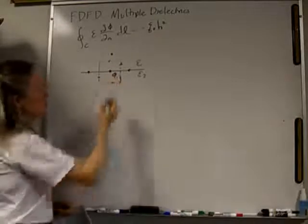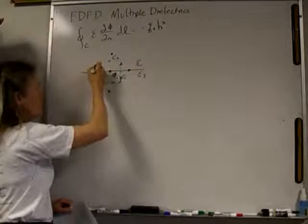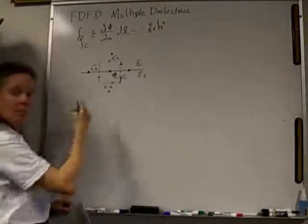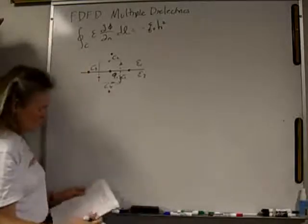It's a square contour, a closed contour. C1 is the first side, C2 is the top, C3 is the left, and C4 is the bottom. So if I added up my integral over C1, 2, 3, and 4, that would give me my closed contour integral.